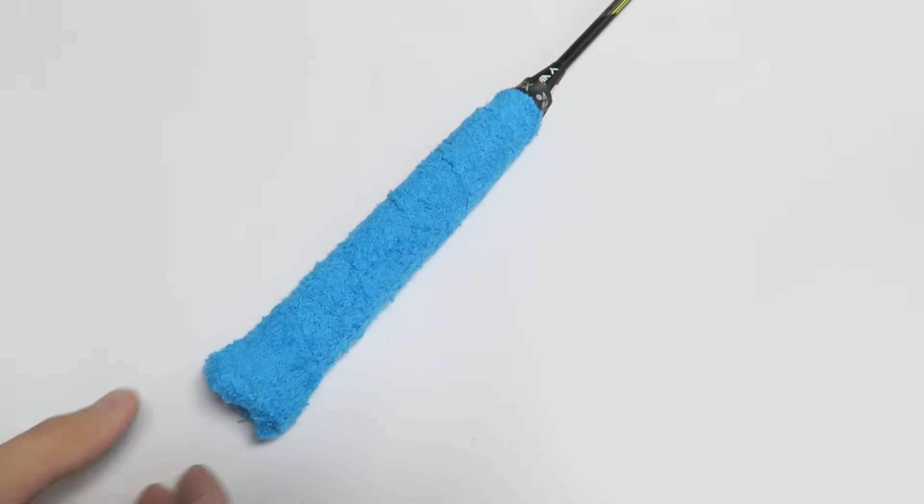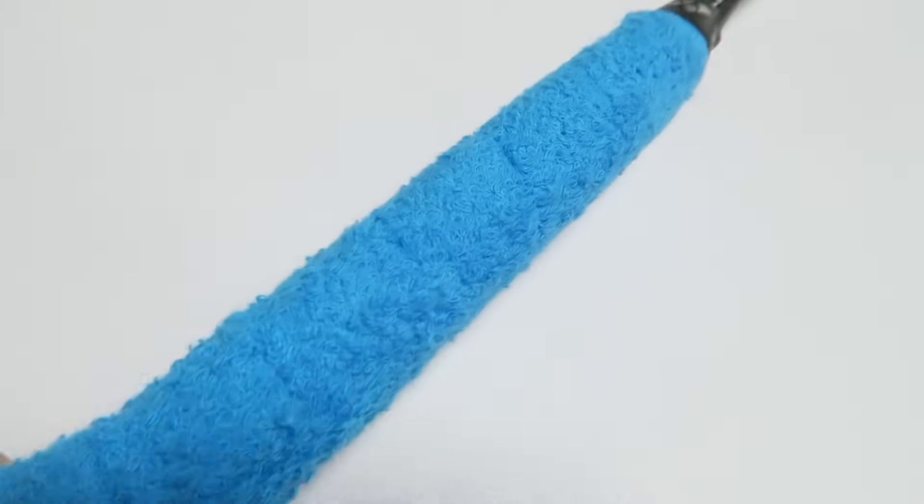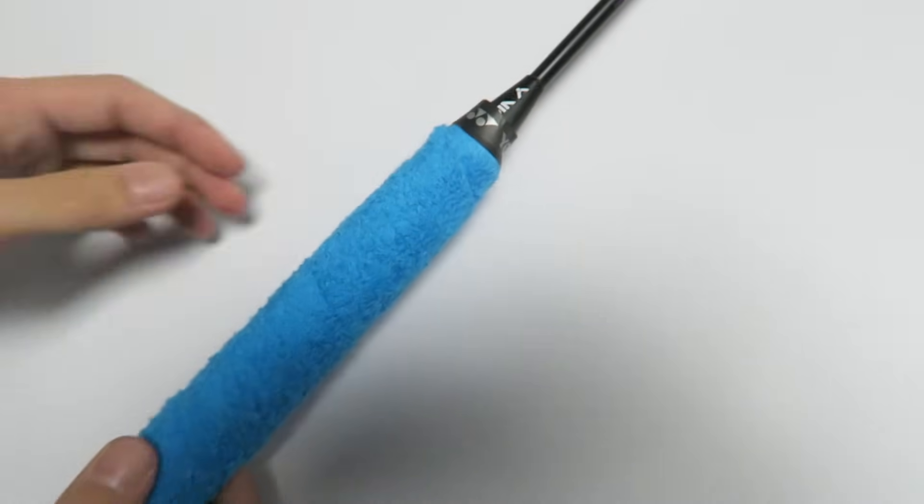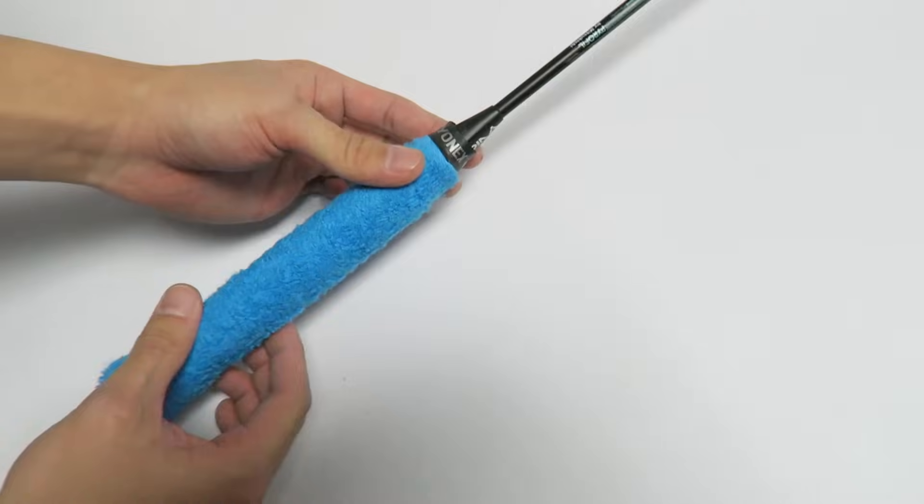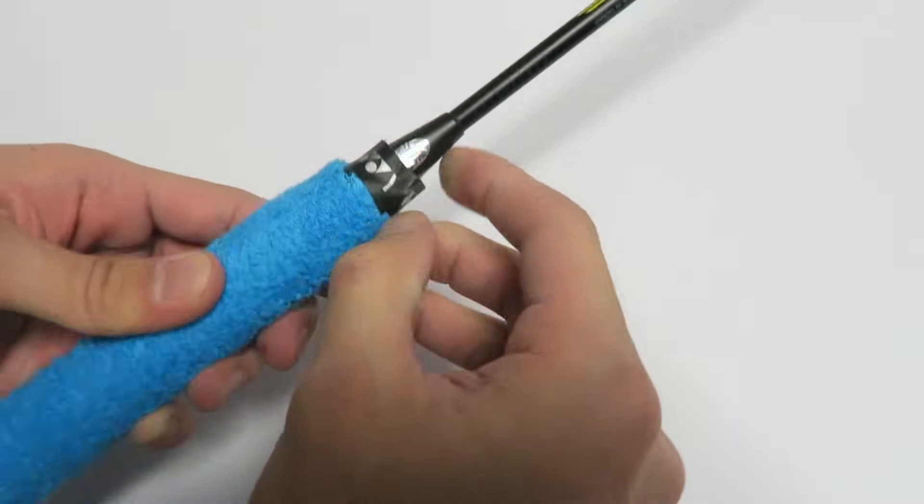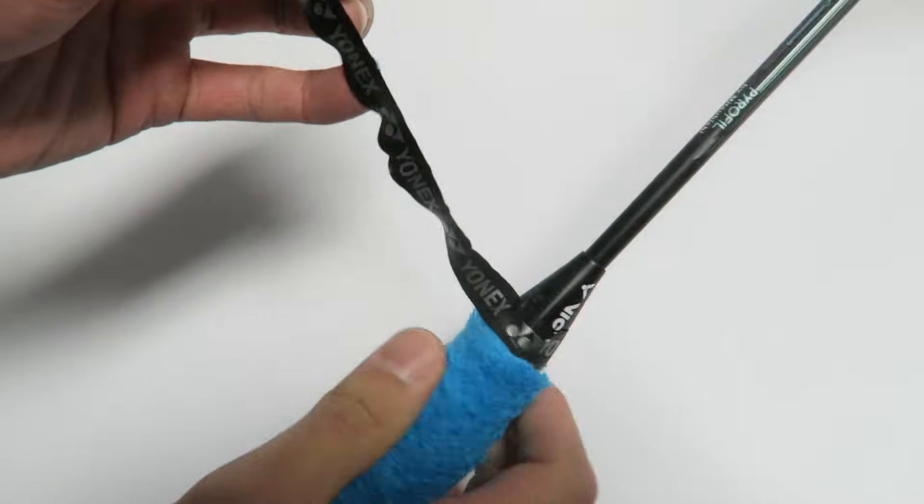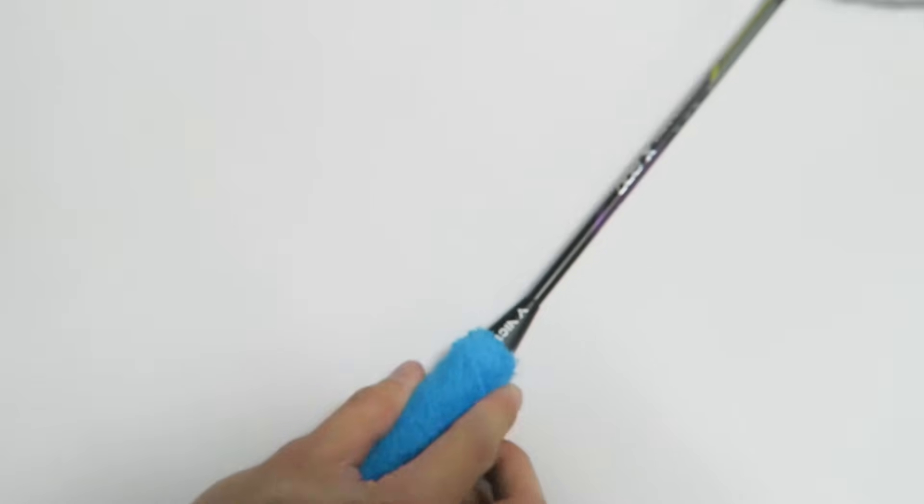So after you put on the towel grip this is what it should look like. I actually find that this sticker that they gave you is not very sticky itself. So I prefer not to use it actually. And I think it looks better without the sticker anyways.